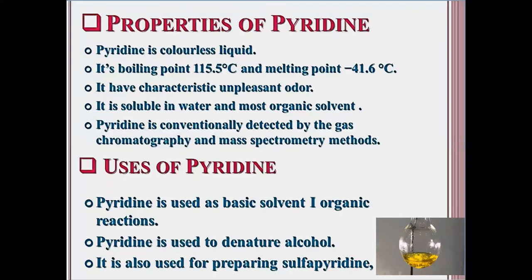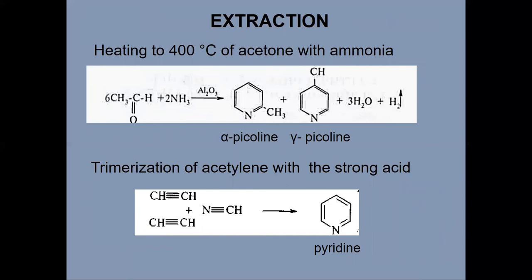Properties of pyridine: pyridine is a colorless liquid with an unpleasant smell. It is used as a basic solvent in organic reactions, for denaturation of alcohol, and for preparing different medications. Extraction of pyridine is achieved by heating of acetone with ammonia, or by trimerization of acetylene with mineral acids.